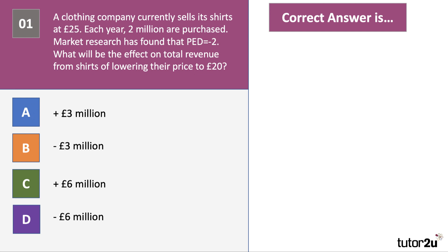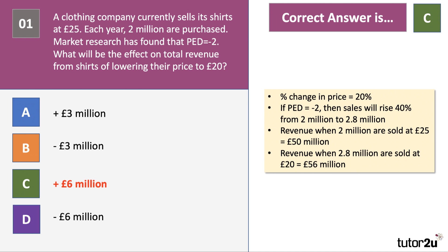They cut the price from £25 to £20, which is a £5 or 20% cut in price. With a price elasticity of demand of 2, a 20% fall in price means sales will rise by 40% — from 2 million up to 2.8 million. They were selling 2 million shirts at £25, giving revenue of £50 million. Now selling 2.8 million at £20 increases revenue to £56 million — a gain of £6 million. The correct answer is C.